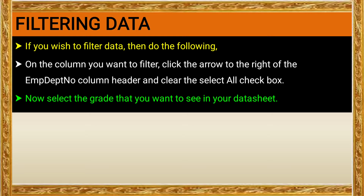In the same department, different names appear. For example, department number 10 has two records, department number 30 has two records, and department number 15 has five members. You can select a particular department number, and the records for that department will be listed and visible in the table view. This is the filtering data option.